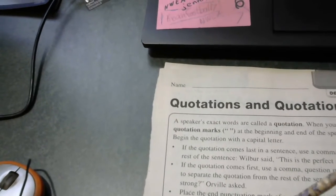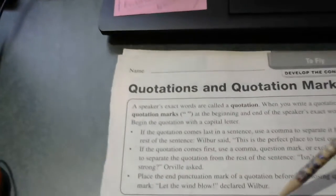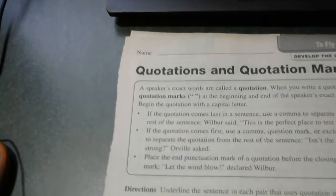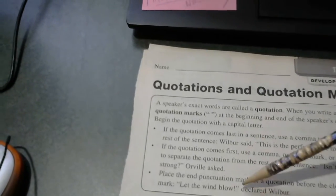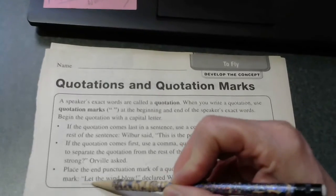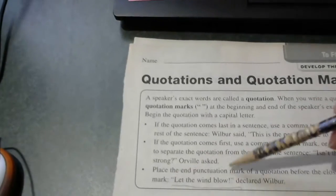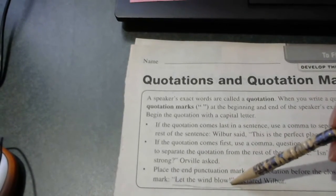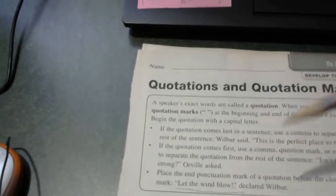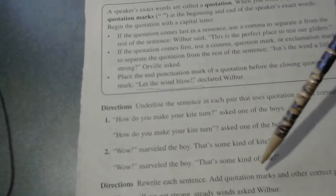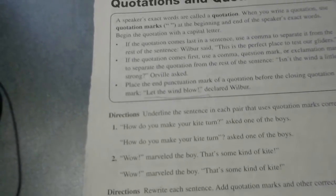Underline the sentence in each pair that uses quotation marks correctly. Remember the rules about where the quotation marks go and where the exclamation point or question mark is placed. Then rewrite each sentence, adding quotation marks and other correct punctuation.